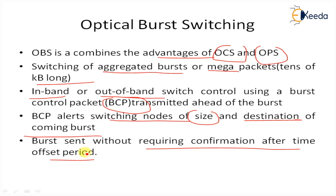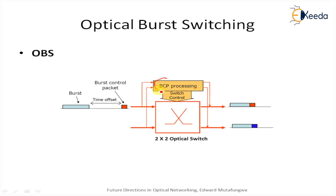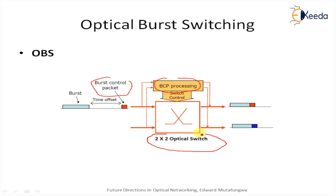The burst control packet is transmitted ahead of the burst. It informs the switching node of the destination port and confirms the offset time period. BCP processing provides these features for OBS optical burst switching. Burst switching is a variant of packet switching networks.